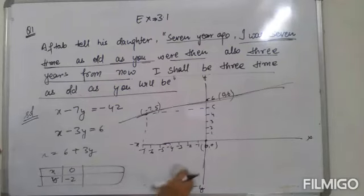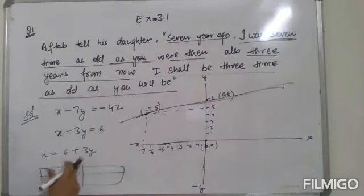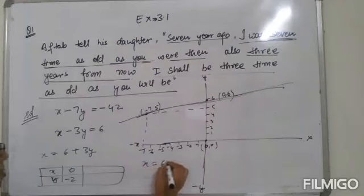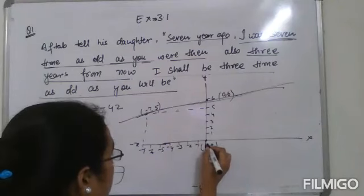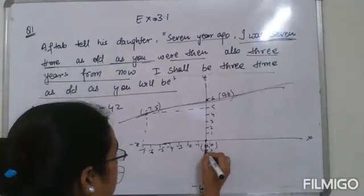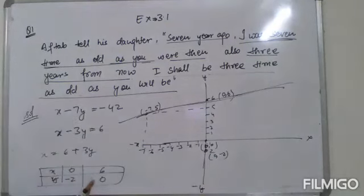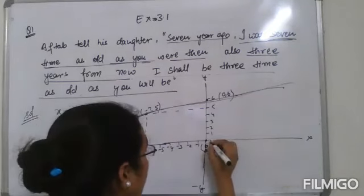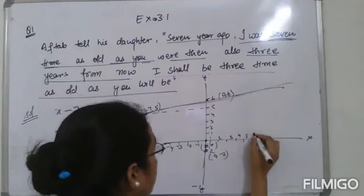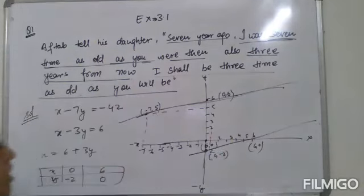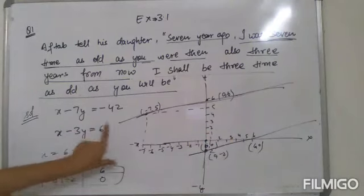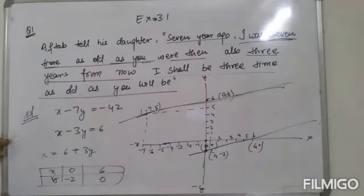Using y equals 0, x equals 6 plus 3y, so if y is 0, x equals 6. Now we have the second set of points. We can plot them on the graph. I was going to show you how to make the graph — I will show you this portion, but we will not cover the next portion in this session.